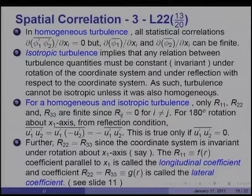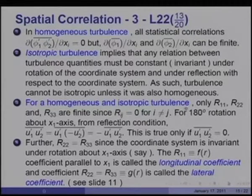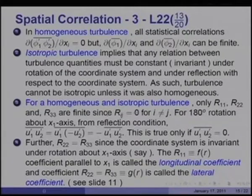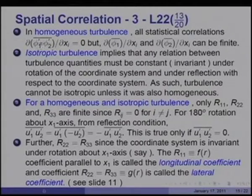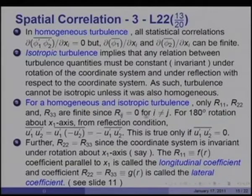For homogeneous isotropic turbulence, only R11, R22, and R33 will be finite, because all other quantities would involve spatial gradients of φ1' φ2'. Therefore, they would all be zero for i not equal to j.